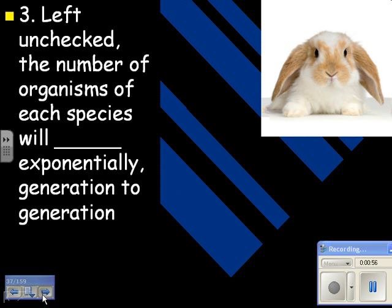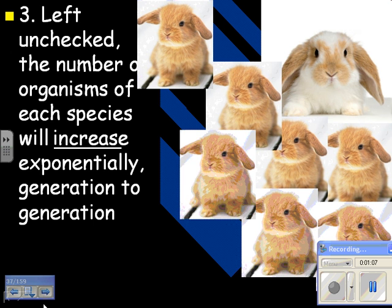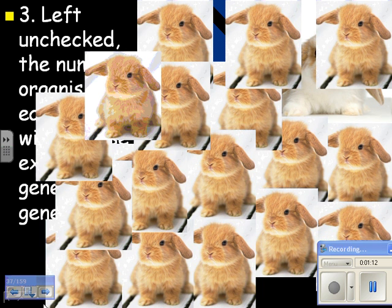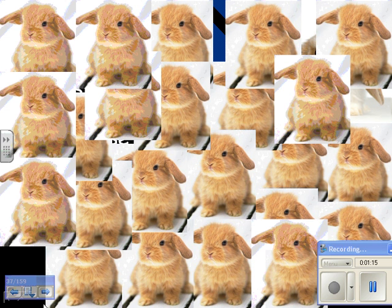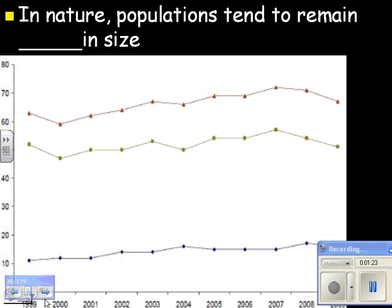Another observation: if left unchecked, the number of organisms of each species will increase exponentially generation to generation. Bunnies have lots and lots of babies. But in nature, populations tend to remain pretty stable in size — this population is growing a little bit, but not really.